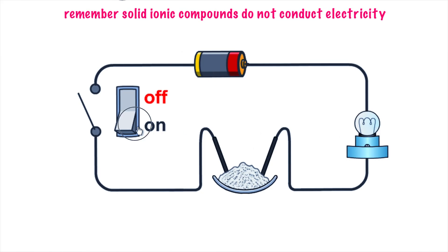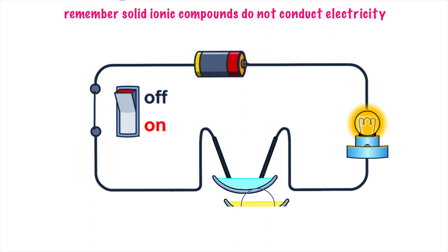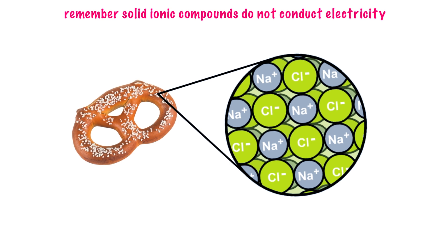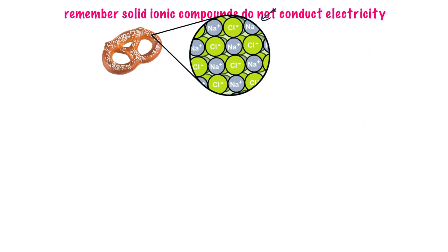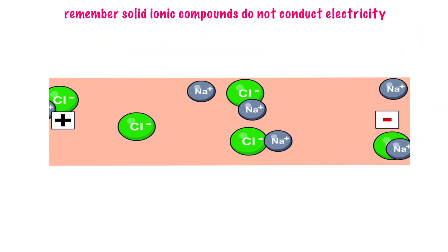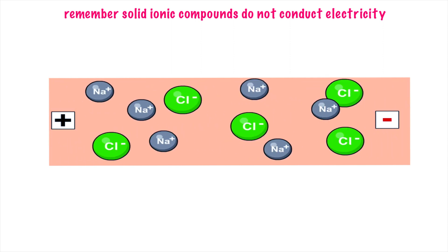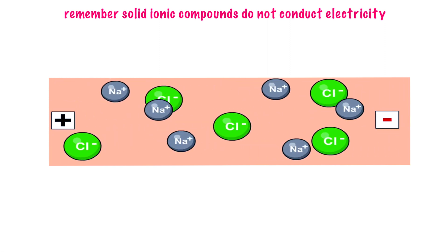Why do ionic compounds not conduct electricity when solid? If you take any solid ionic compound, the voltage doesn't pass through. However, molten or dissolved ionic compounds do conduct electricity. This comes down to structure — as we saw in the ionic bonding lesson, ions are fixed in position in the solid crystal. Once we melt or dissolve the ionic compound, the ions start to move freely, and that's when we can do electrolysis — separating those positive and negative ions.